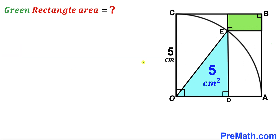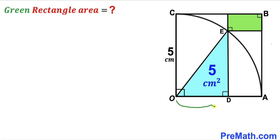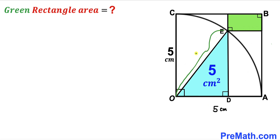Let's get started. We know the radius of this quarter circle is 5 centimeters, so side OA is the radius and equals 5 centimeters. Likewise, OE is also a radius, so it equals 5 centimeters as well. Now let's focus on the blue triangle ODE — we'll label the length OD as lowercase a and the length DE as lowercase b.